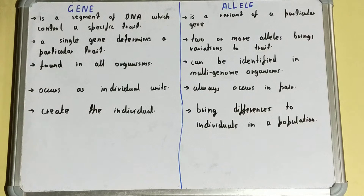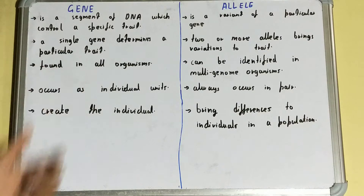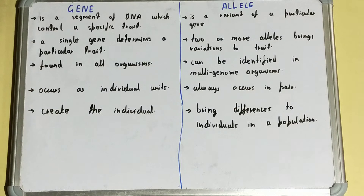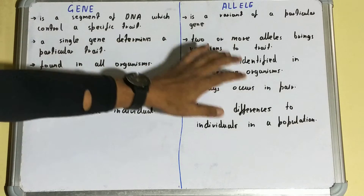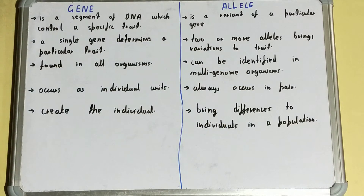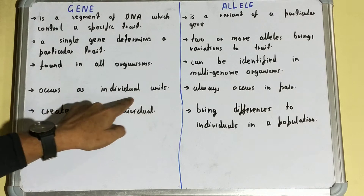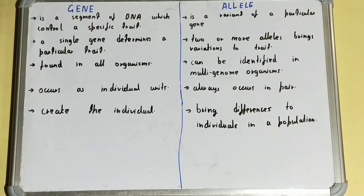A gene is found in all organisms, but an allele can be identified in multi-genome organisms only. Also, a gene occurs as individual units.